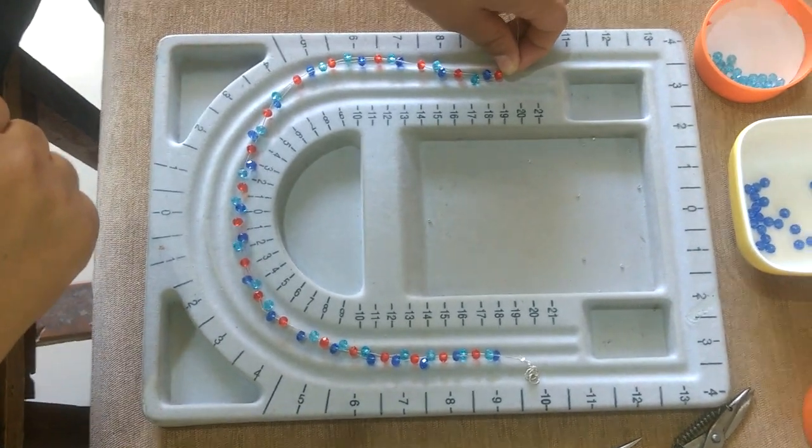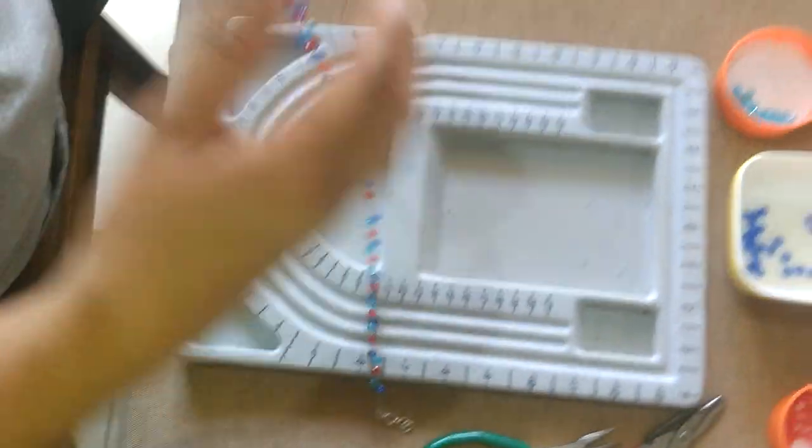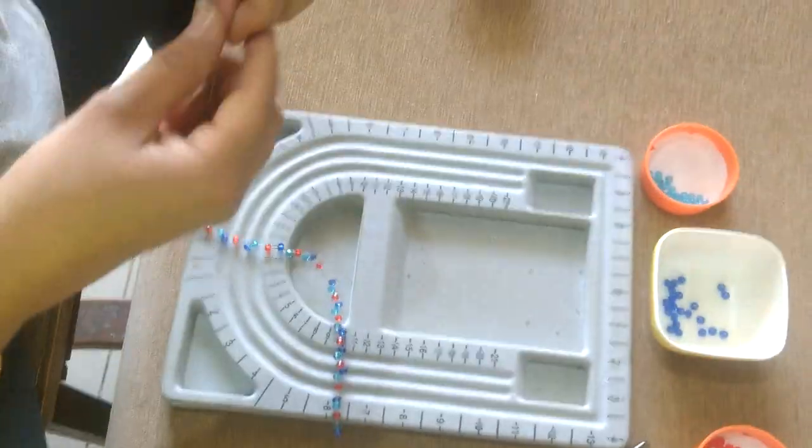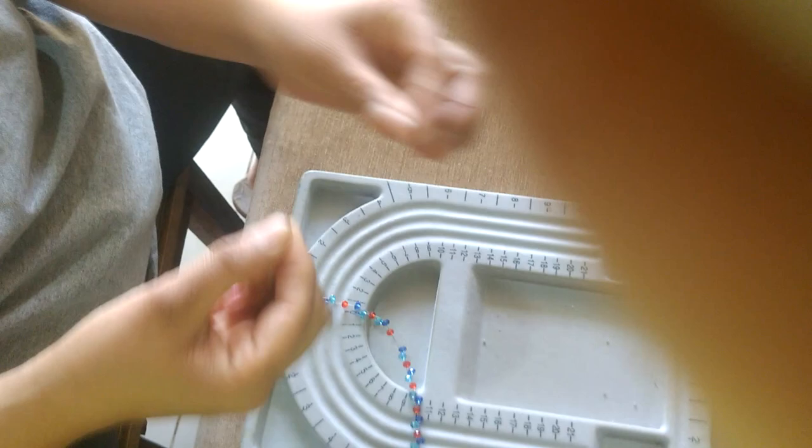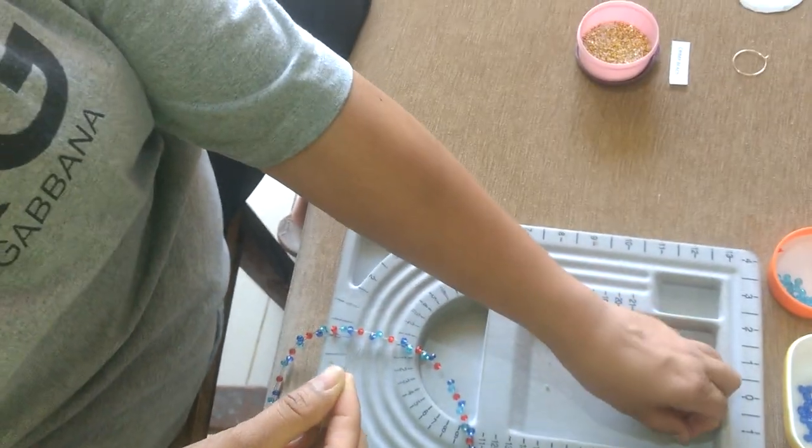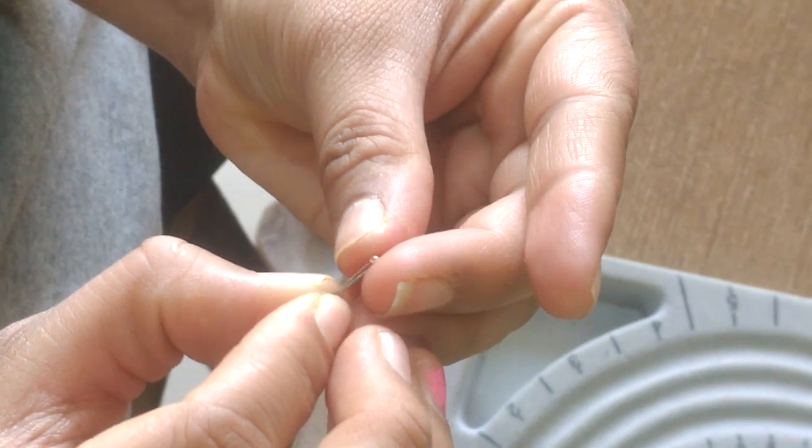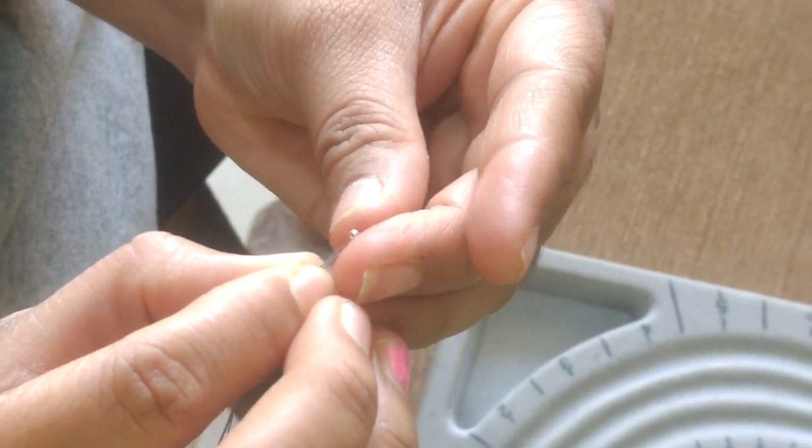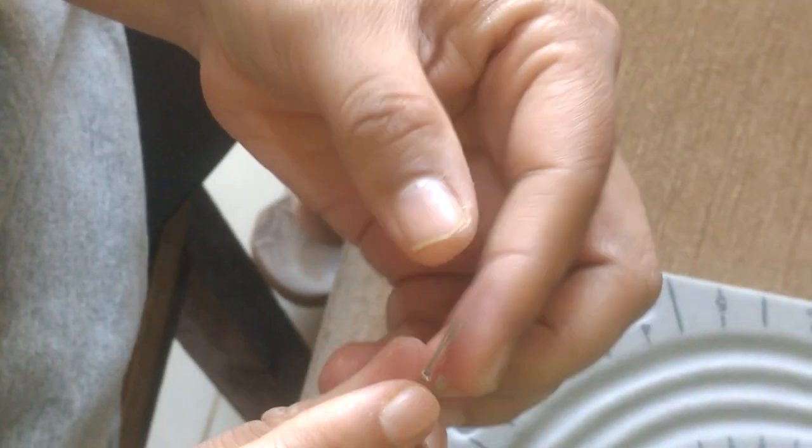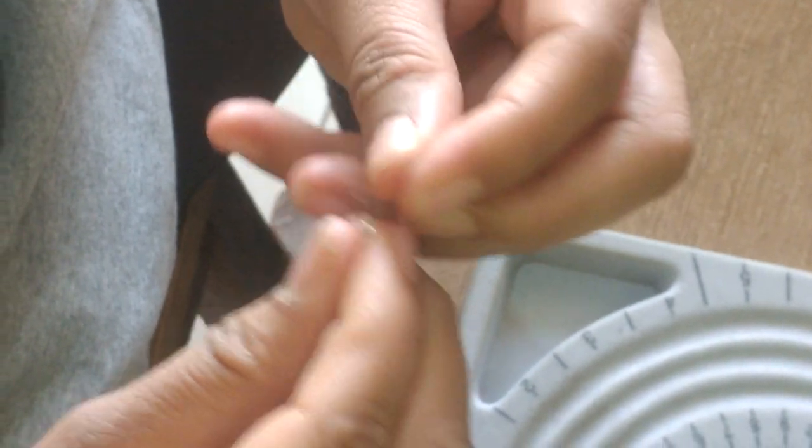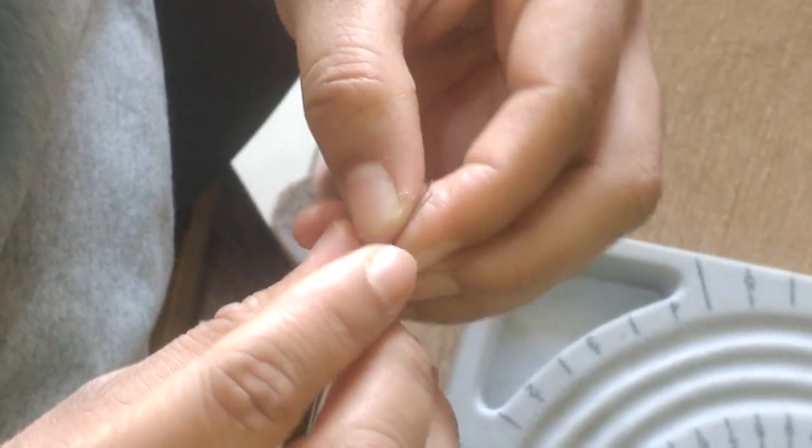Once this is done we're going to close it again. We're going to take this little crimp bead which is very tiny. Put one string, other string also. You get big crimp beads also in the market.